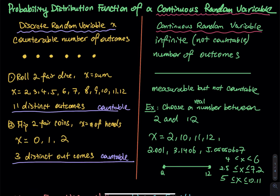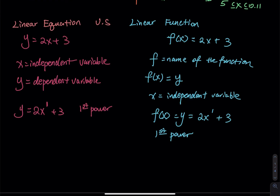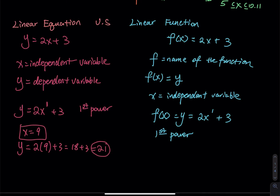Other than this comparison, let's talk about linear equation versus linear function. A linear equation has a left-hand side equal to a right-hand side. For example, y equals 2x plus 3 is a linear equation. Here, x is called the independent variable, and y is called the dependent variable because the value of y depends on the value of x. It is called a linear equation because the independent variable x is raised to the first power.